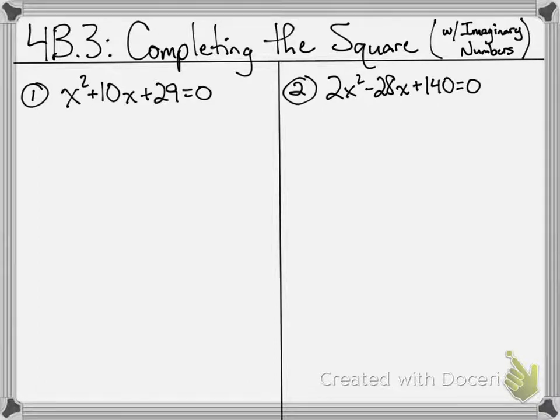So the goal in these problems that we're going to do here is to find what x is. We're going to use this completing the square process to do so. Let's take a look at the first example here: x squared plus 10x plus 29 equals 0.